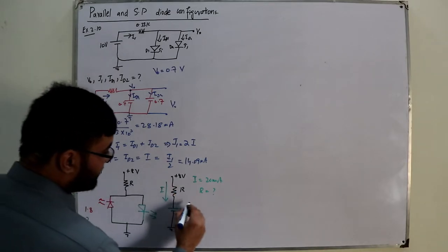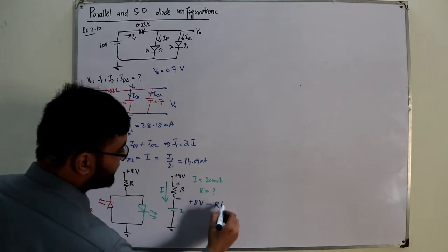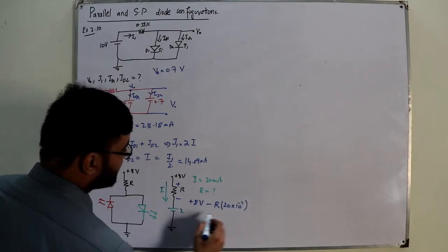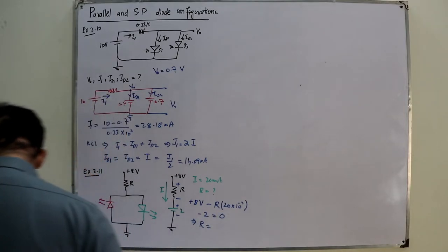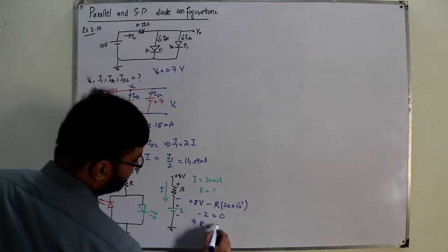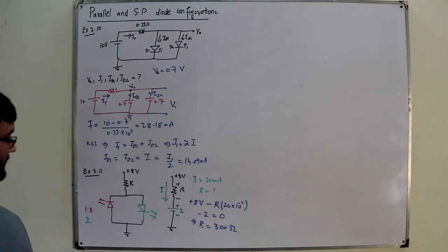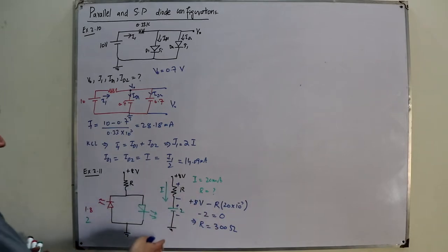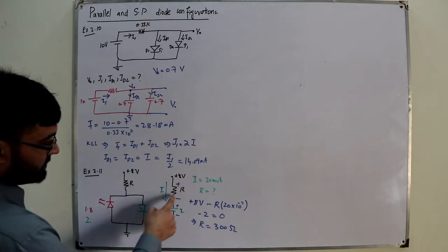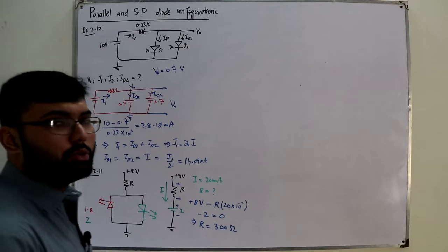The +8V forward biases the green LED while reverse biasing the red one, so the red LED is an open circuit equivalent. The equivalent circuit has the +8V source, resistor R, and the green LED at 2V to ground. Applying KVL: +8 - R×(20×10⁻³) - 2 = 0, giving R = 300 ohms. You could also calculate R as (potential difference) / (current value). The book then replaces the green diode with a blue one, which you can read for yourself.